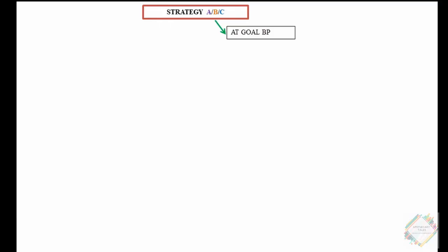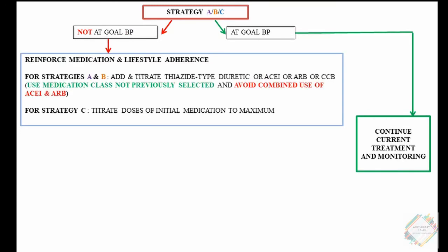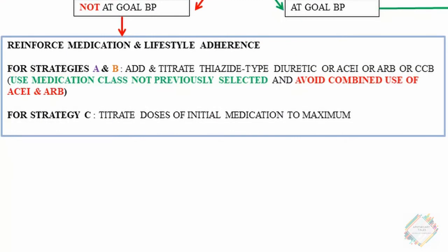In the next step of the algorithm, if the BP goal has been achieved, we continue the current treatment and proceed with monitoring. If the goal BP has not been maintained, we reinforce medication and lifestyle adherence. For strategies A and B, we add and titrate a thiazide-type diuretic, ACE inhibitor, ARB, or CCB — using a medication class not previously selected — and avoid combining ACE inhibitors and ARBs, as this combination does not reduce poor outcomes and leads to more adverse drug-related events.